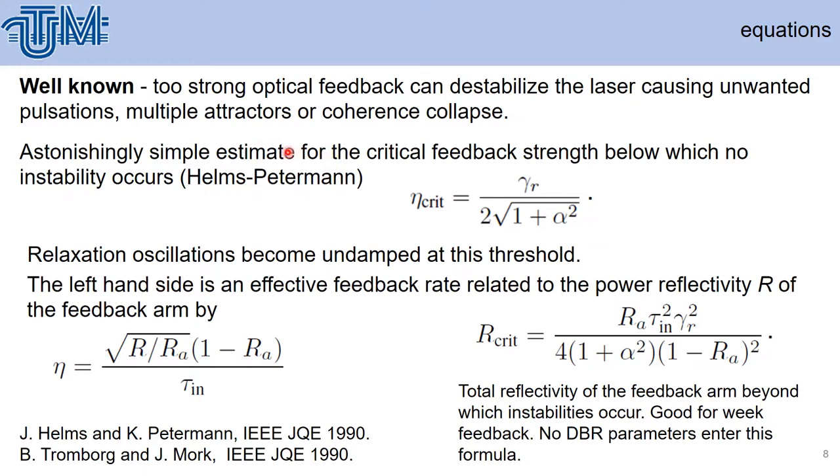We can estimate the critical feedback strength from the well-known Helms-Petermann formula, which is here. The relaxation oscillation becomes undamped at this threshold. The left-hand side of this formula is the effective feedback rate with power reflectivity R.